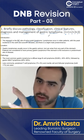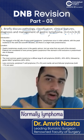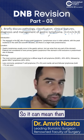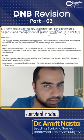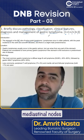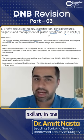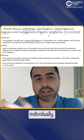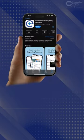Normally, lymphoma occurs in the lymph nodes — it can be in the cervical nodes, mediastinal nodes, or axillary nodes. These are the common nodes which can be involved individually.